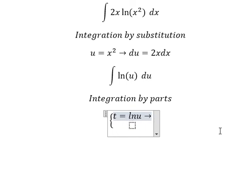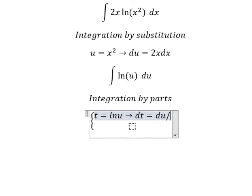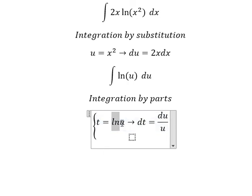We have dt equals du over u. After we set dv equals du, we have v equals u.